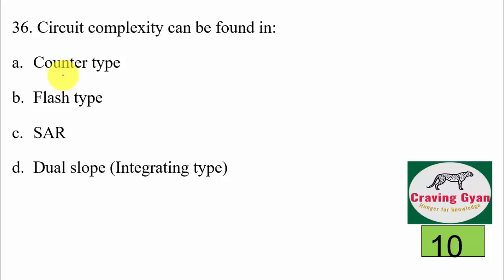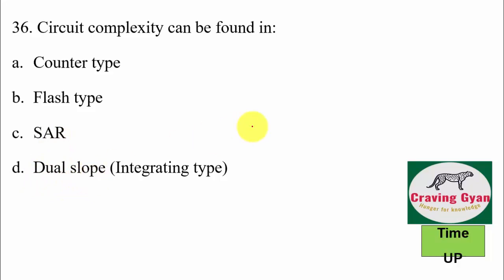36th question: circuit complexity can be found in which A-to-D converter — counter type, flash type, SAR, or dual slope? Since flash type makes use of comparators built from op-amps, it occupies more area. Hence flash type is the correct answer, option B.